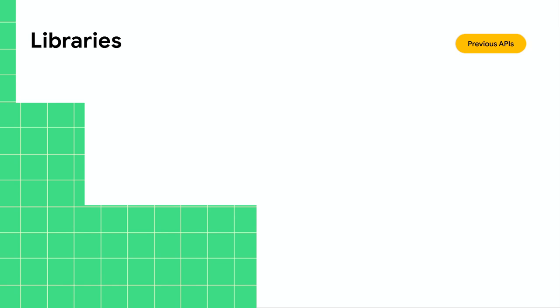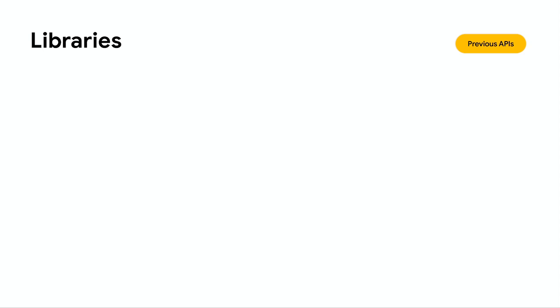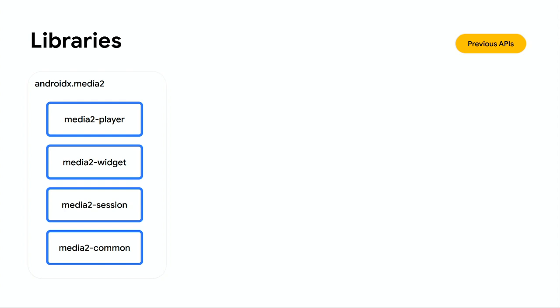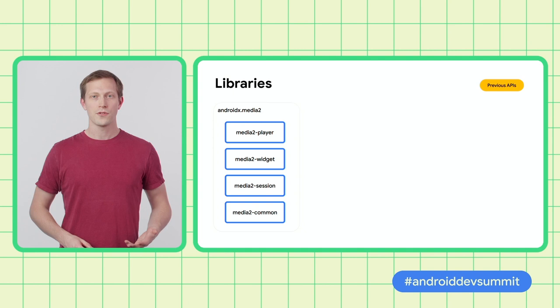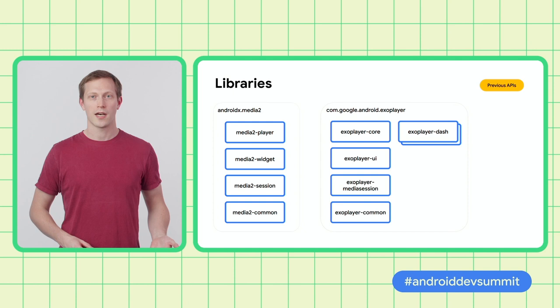However, knowing what library to use to implement this can be quite a challenge. Let's take a quick look at some of the libraries that are available for implementing these use cases. Firstly, there's AndroidX Media 2, which was the successor to the original Media Compatibility Support Library. This has modules covering playback, UI components, media sessions, and common data structures and functionality used across the modules. There's also ExoPlayer, which provides a player implementation used by hundreds of thousands of apps, along with libraries for building user interfaces, DASH playback, client-side ad insertion, and so on.